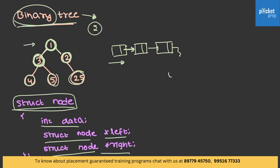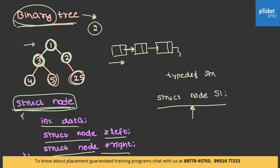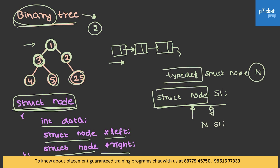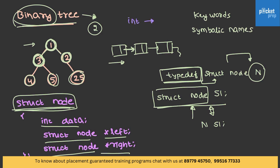Now I want to discuss typedef. If we want to create an object for this, instead of writing the full struct declaration every time, I can declare typedef struct node and give it a name like capital N. So instead of writing struct node, I can replace it with N. Typedef is used to replace a particular keyword with a flexible letter or another word. You need to remember only one thing: typedef is used to modify only keywords and symbolic names. For example, if you have an integer and want to change its name to INT, you write typedef, the keyword to be modified, followed by the replacement. Now instead of int, you can write INT and the conversion will be done implicitly.